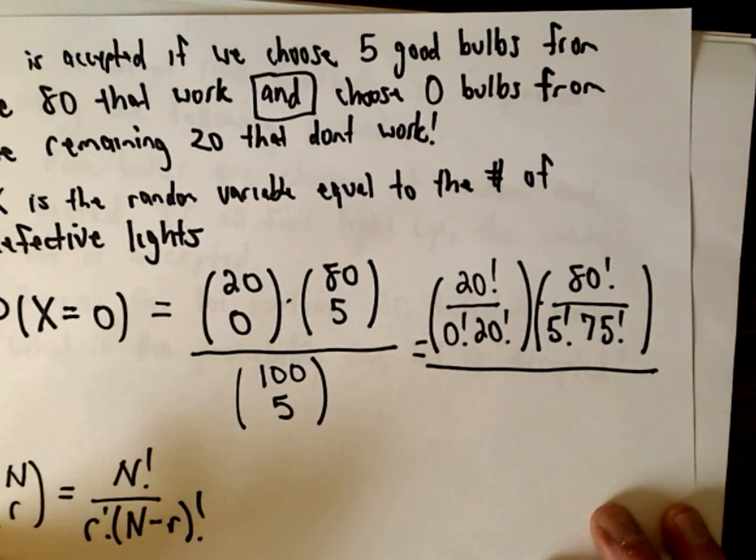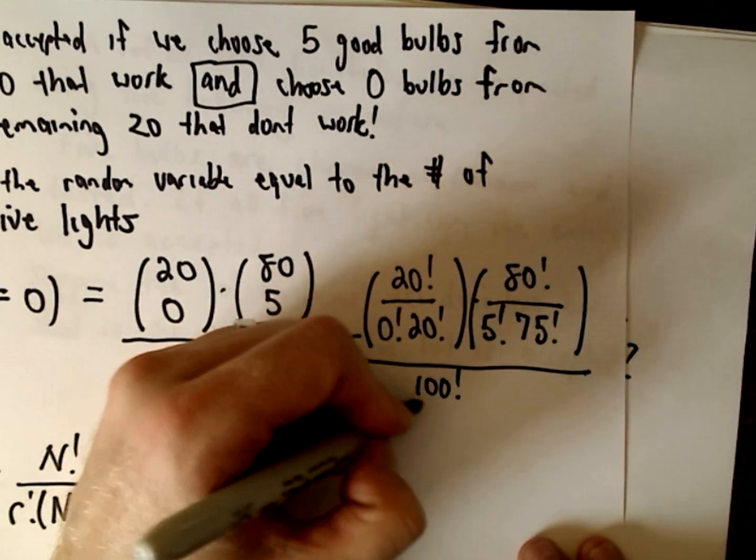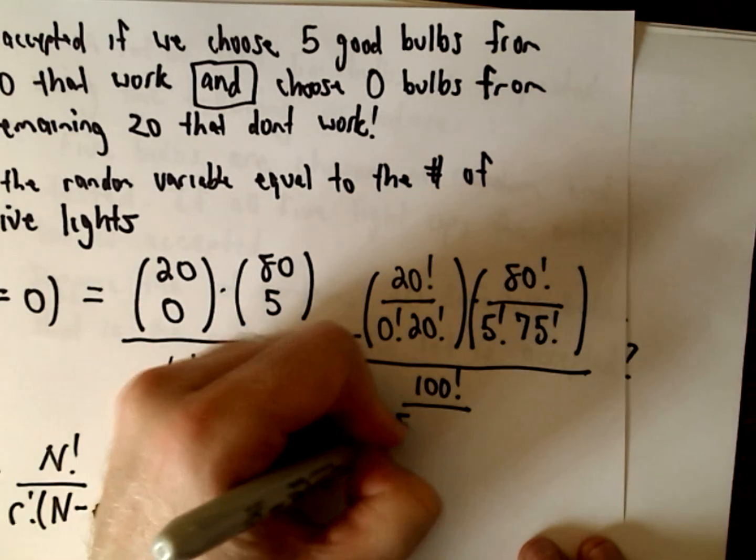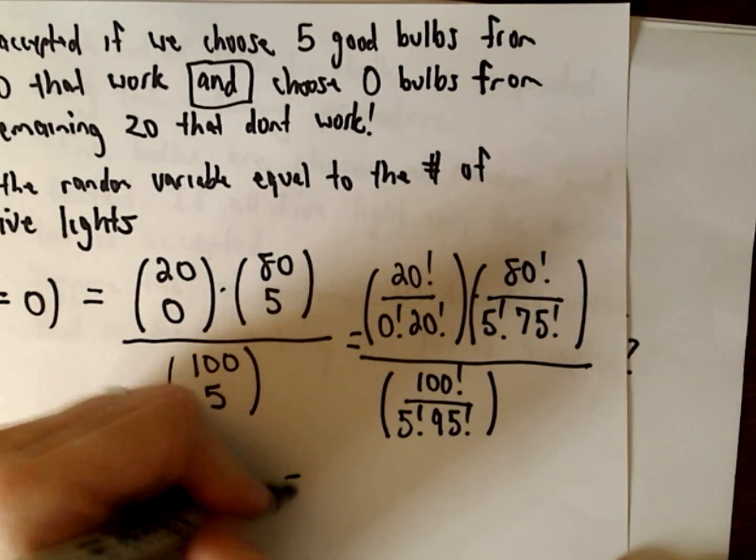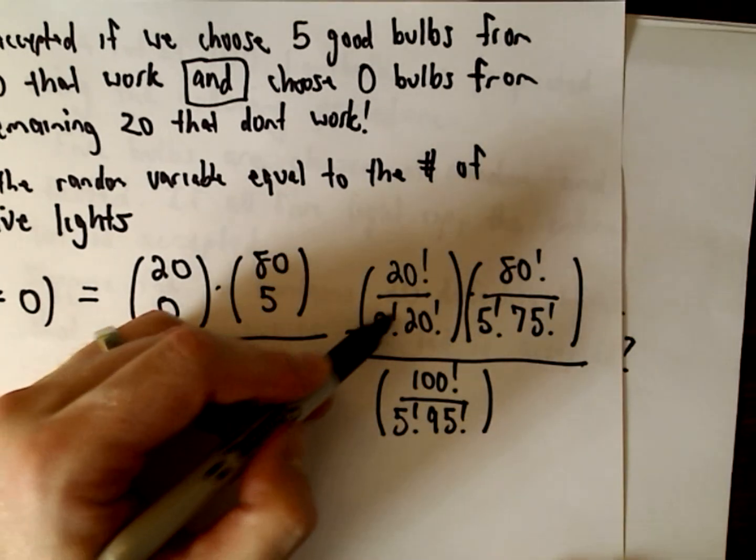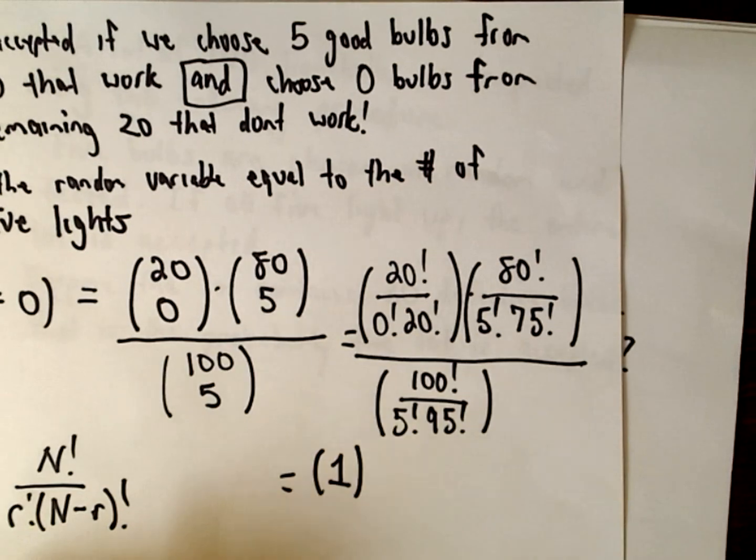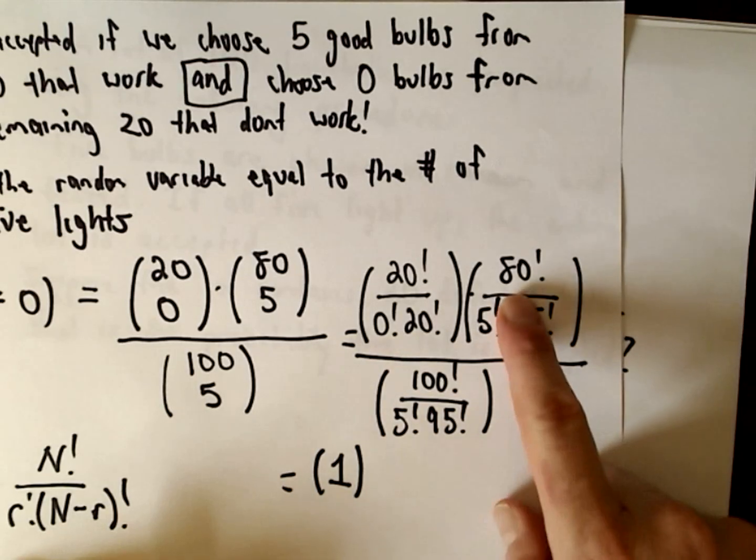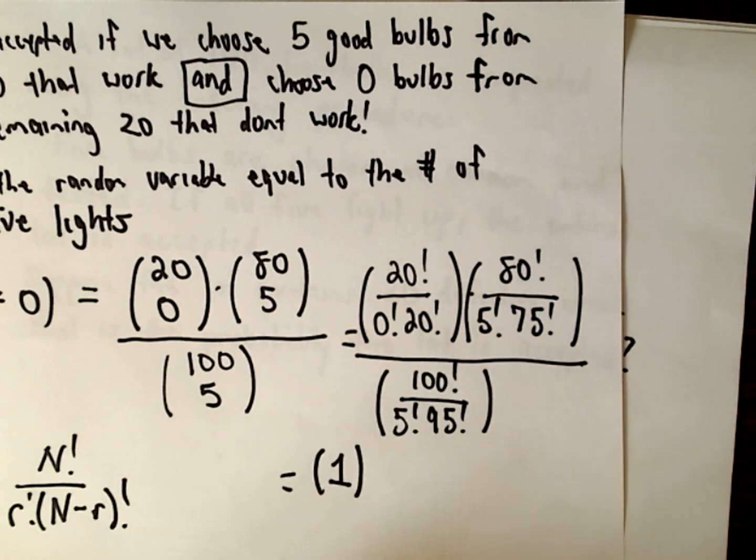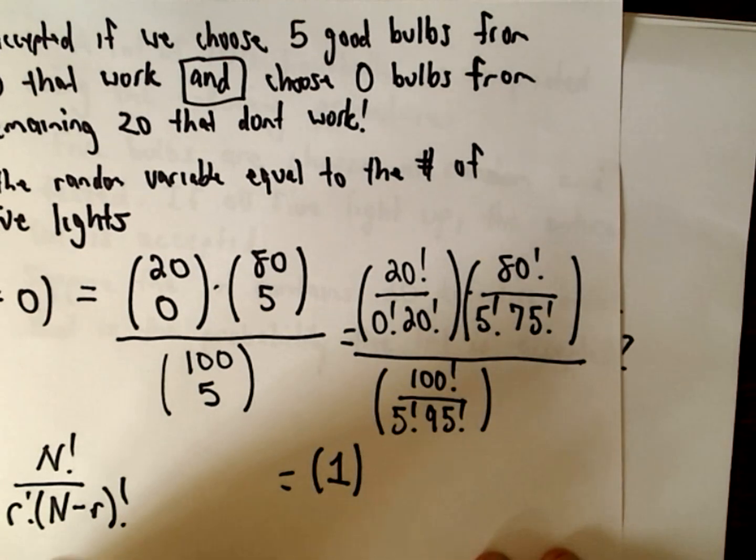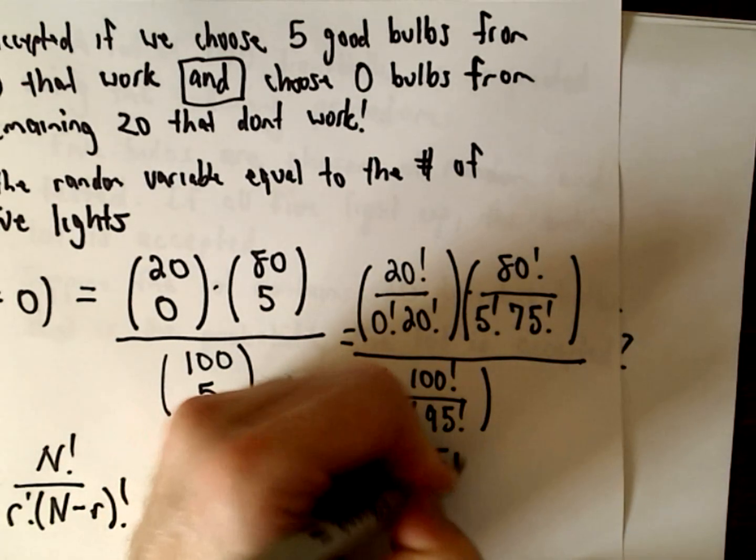And then 100 choose 5 is 100 factorial divided by 5 factorial times 95 factorial. So again, I'm not going to compute all of this by hand. Since 0 factorial equals 1, 20 factorial over 20 factorial is also equal to 1. You can compute with a calculator or even type this into a Google search engine. It turns out that 80 choose 5 is 19,513.